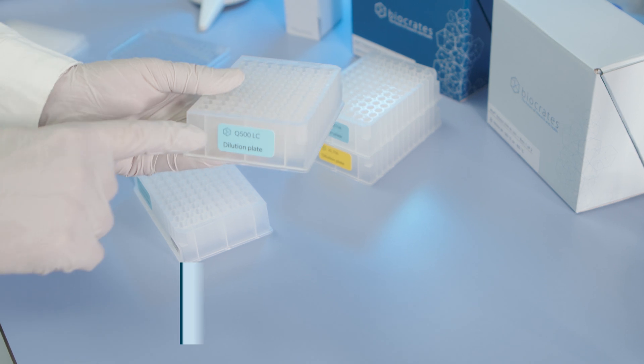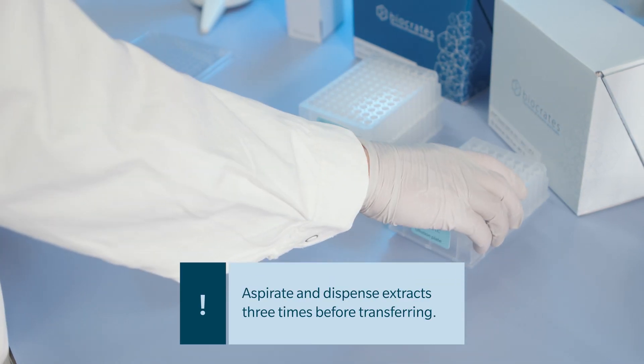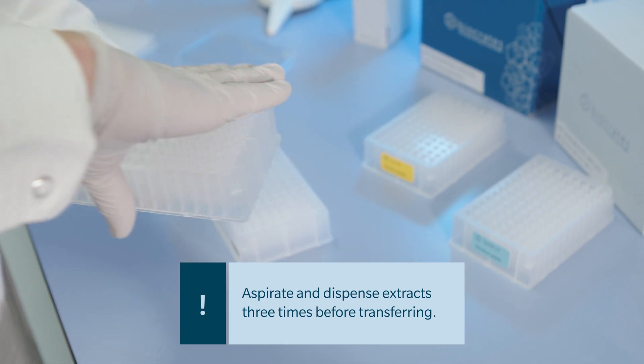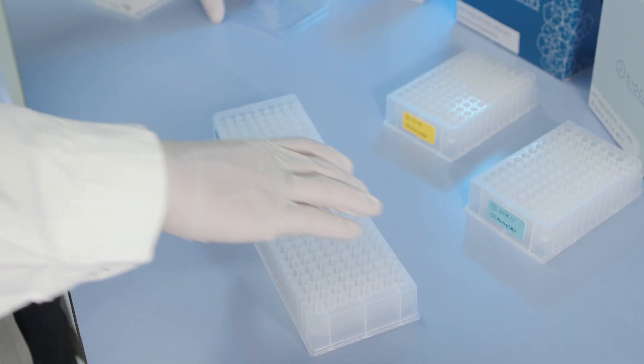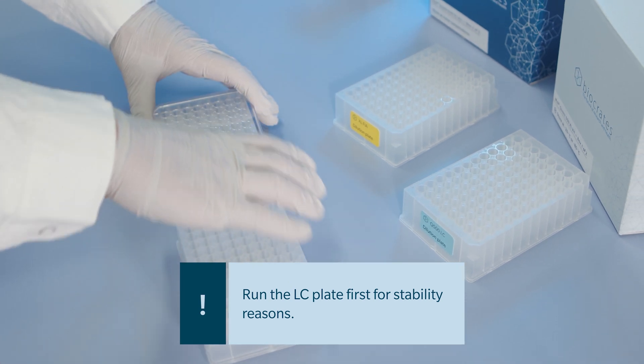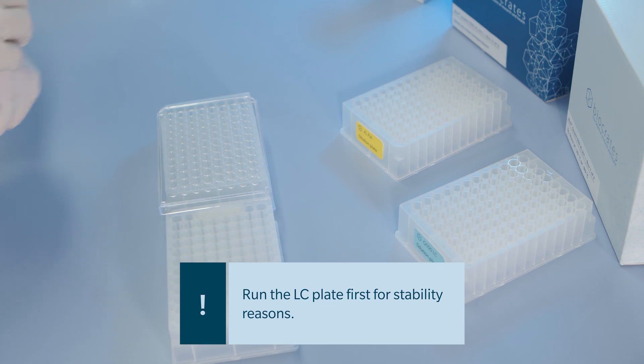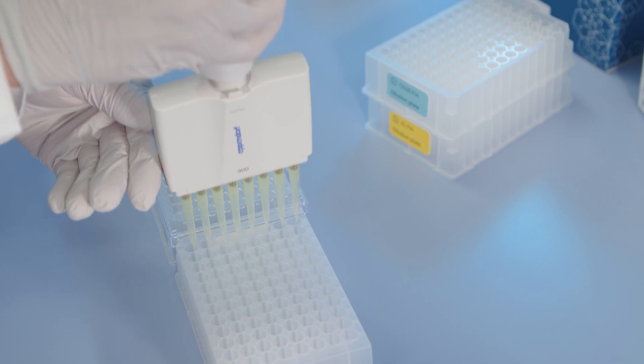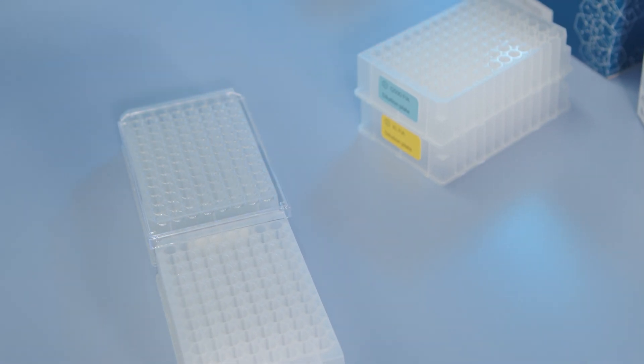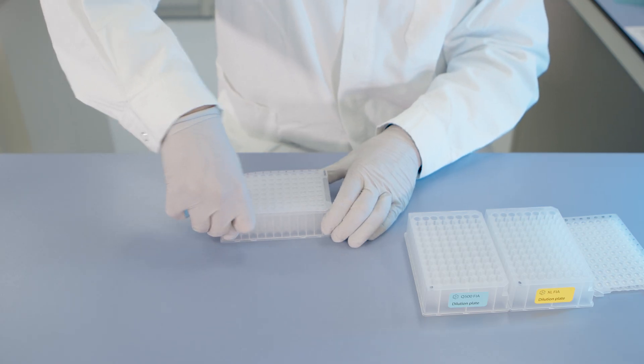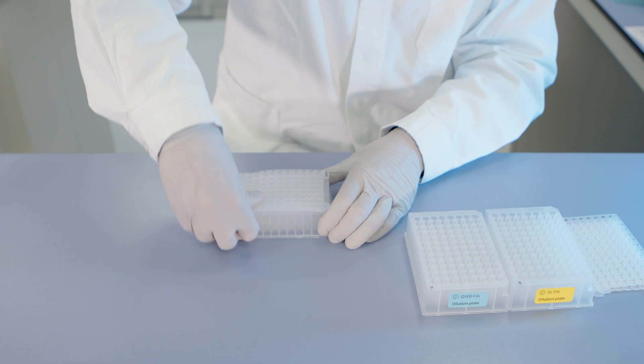For the dilution step, three empty 96 well plates provided with the kit will be used. Please note the respective labels Q500 LC Dilution, Q500 FIA Dilution, and XL FIA Dilution. For the Q500 plate, the extracts have to be split for LC and FIA parts respectively. For the LC part, open the empty 96 well plate labeled Q500 LC Dilution plate and place it next to the Q500 capture plate. Transfer 150 microliters from each well of the Q500 capture plate into the empty 96 well plate. Add 150 microliters of water to each well. Seal the plate with the provided silicone mat and shake the plate for 10 minutes at 600 RPM.